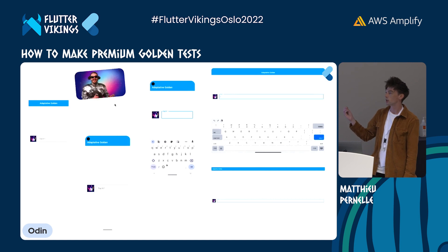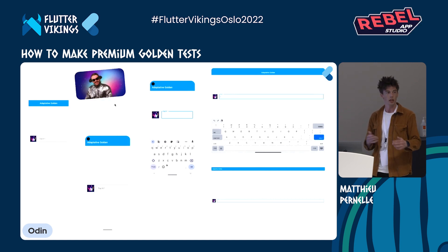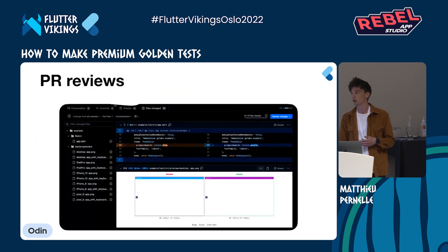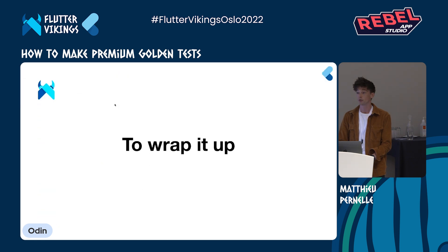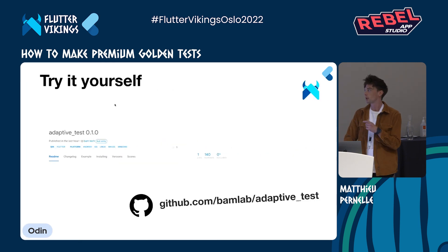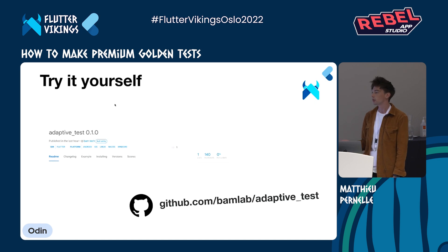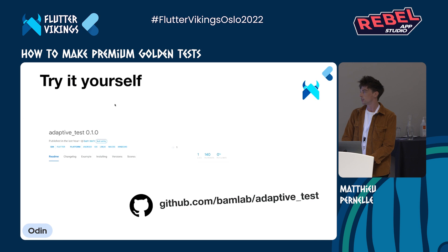Another benefit is pull request reviews, because you can easily see what your teammates are working on. To wrap it up, I made a package available on pub.dev so you can try it on your application. If you want to take a look at the GitHub repository, you can see how it works under the hood. Any suggestions or contributions are more than welcome.